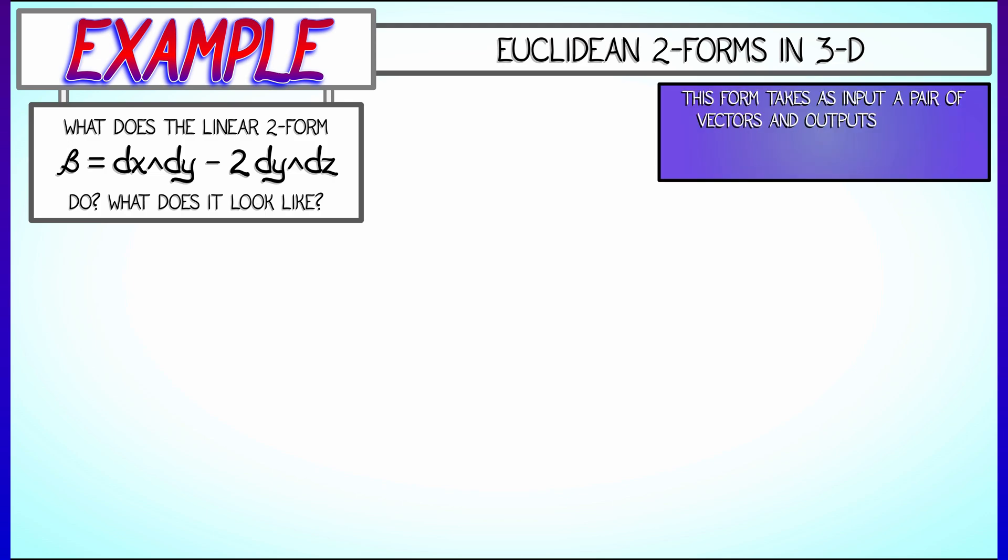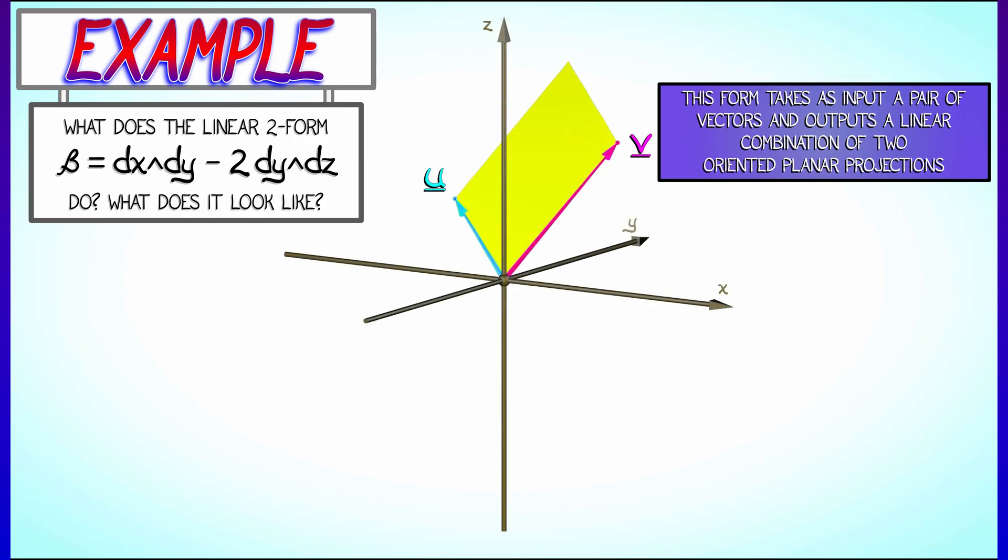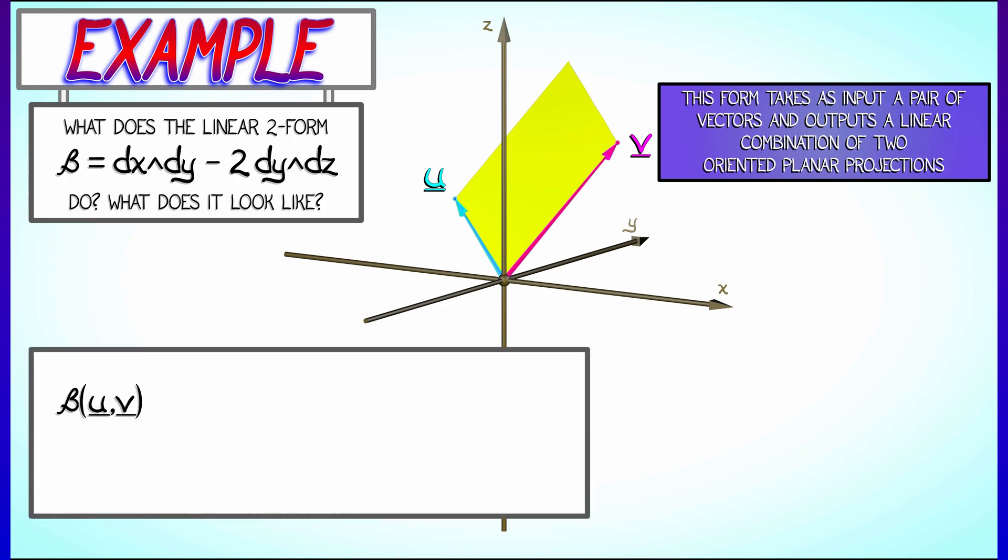Well, geometrically, this takes in a pair of vectors and then outputs something having to do with oriented planar projections. So let's think, if I have two vectors u and v,